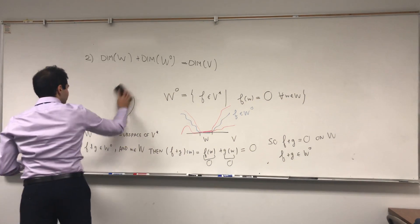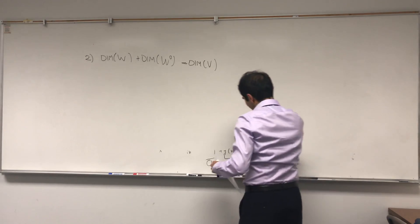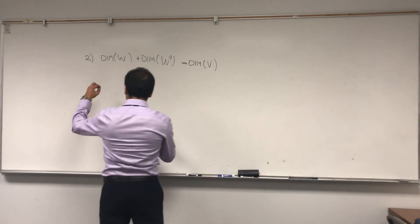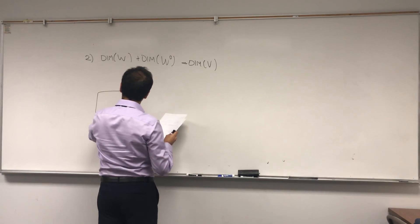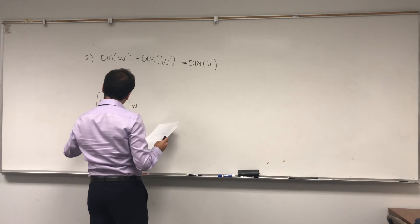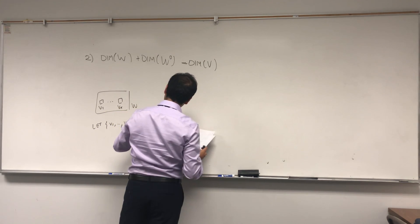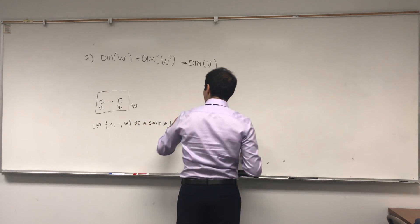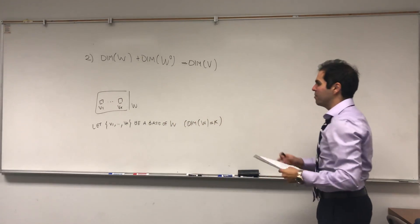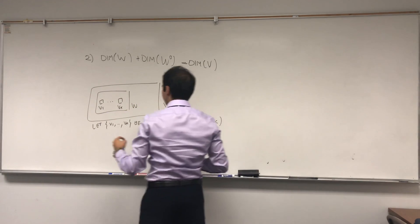And how can we do this? It's a super neat proof, because it just uses all the tools in linear algebra. So suppose we have a basis of W. So suppose this is W, and we have a basis v1 up to vk. So let v1 up to vk be a basis for W. So in other words, the dimension of W, in this case it's k.